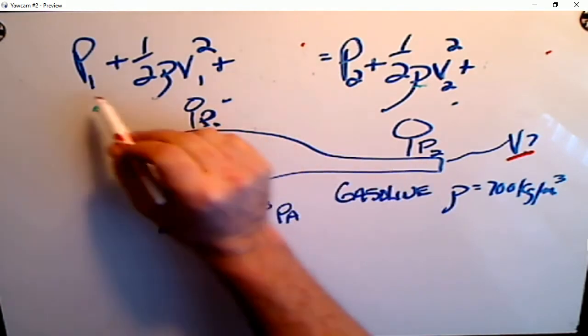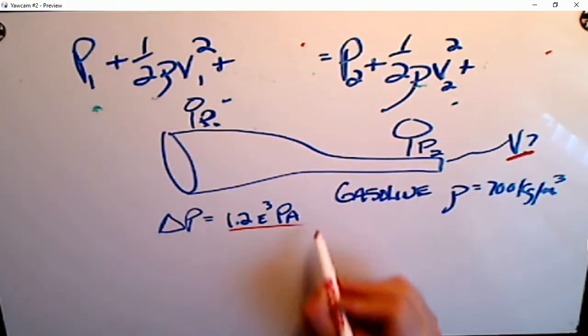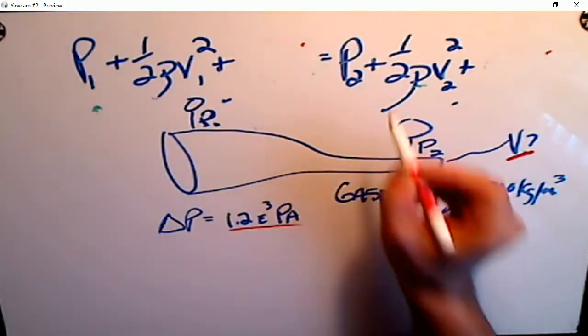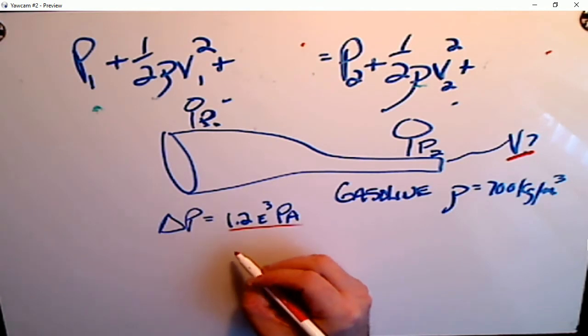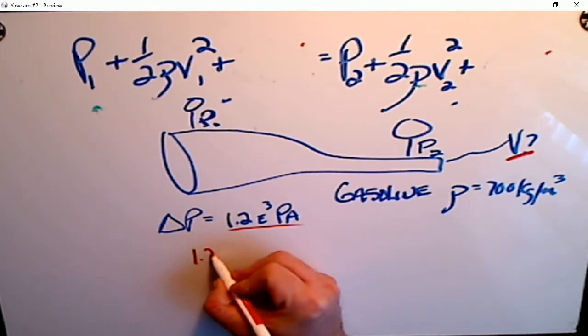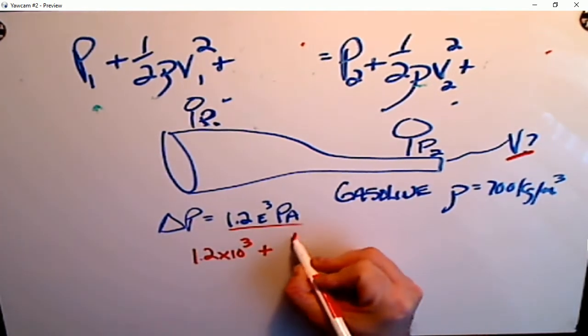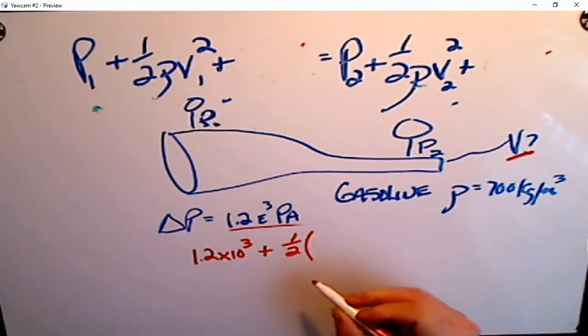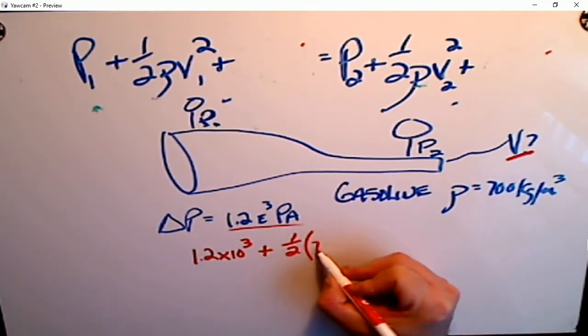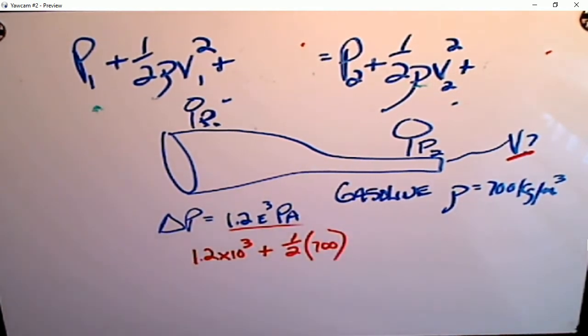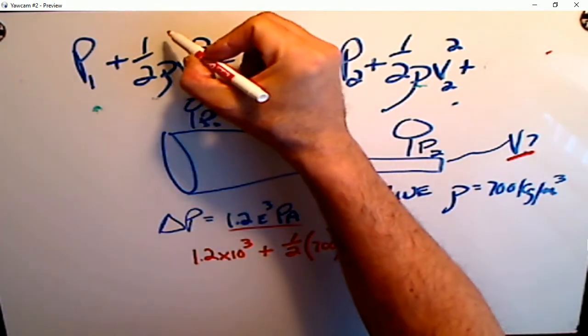Well, how do we do that? Well, you see Bernoulli's equation. First thing I can do is cancel out the height—there's really no height difference here that I need to worry about. Let me just erase it. We know that P1 minus P2 is this, so I could just put that on this side: 1.2 times 10^3 plus one-half times that density of 700. But how do I get the velocity?